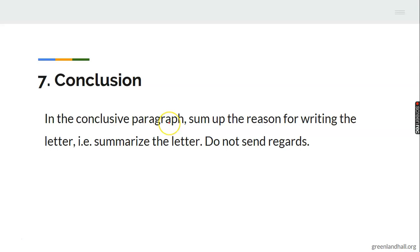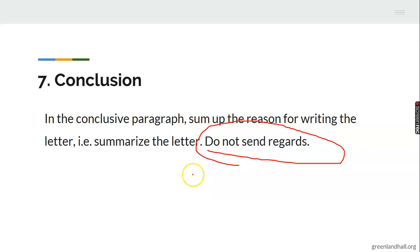Feature seven — the conclusion. In the concluding paragraph, sum up the reason for writing the letter — that is, summarize the letter. Do not send regards. After summarizing your letter, do not say 'my regards to your office members' or 'my regards to so-and-so.' Just summarize the letter and end it.